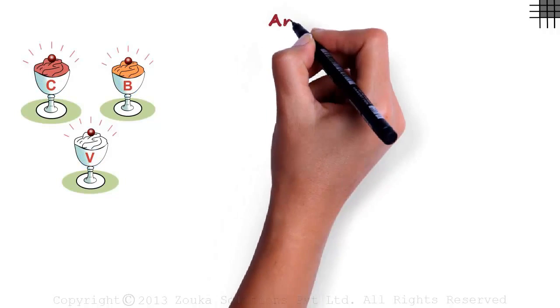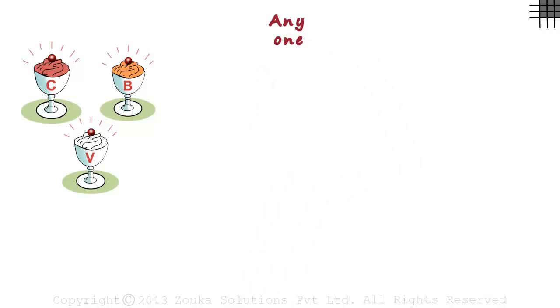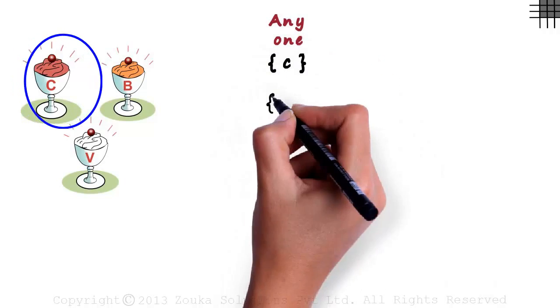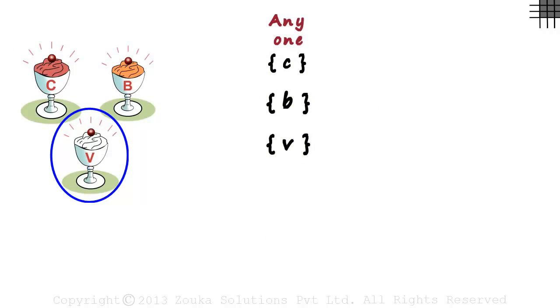Say you can have only one kind of ice cream at a time. It means you can have either chocolate or butterscotch or vanilla. That was simple.